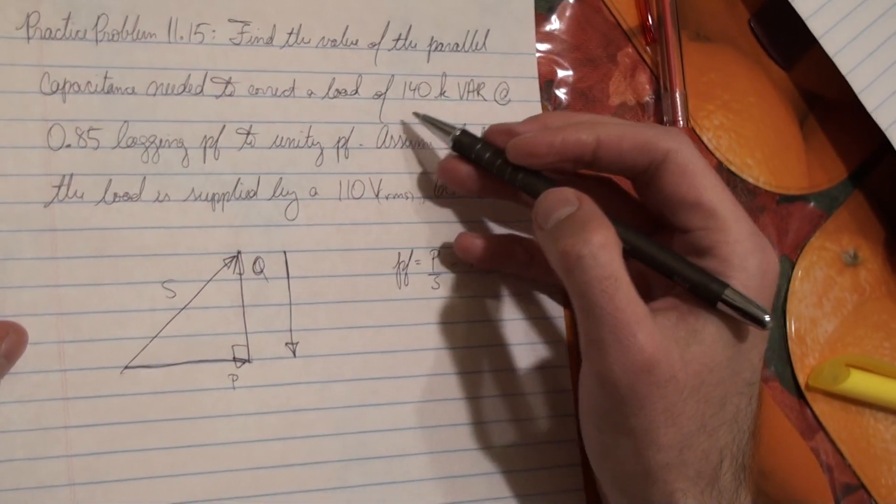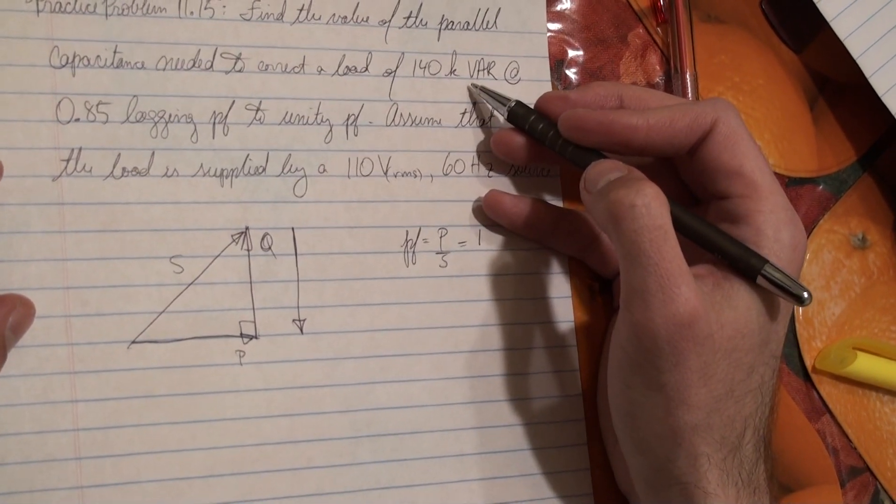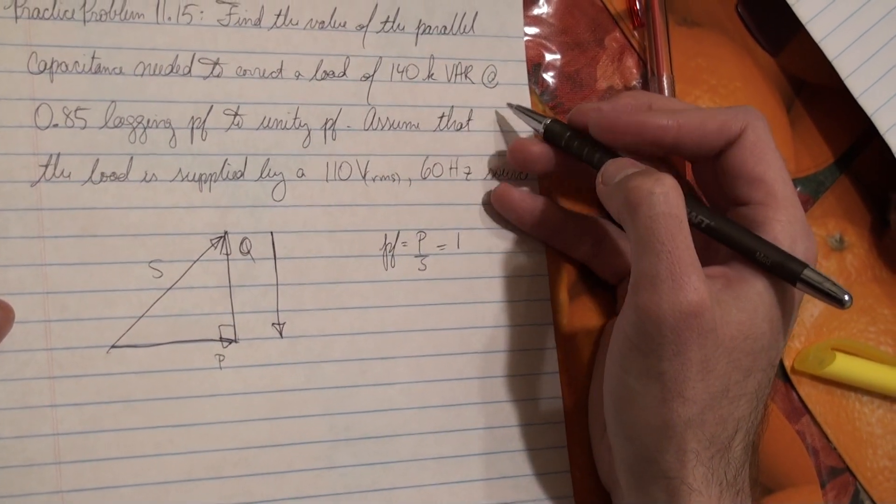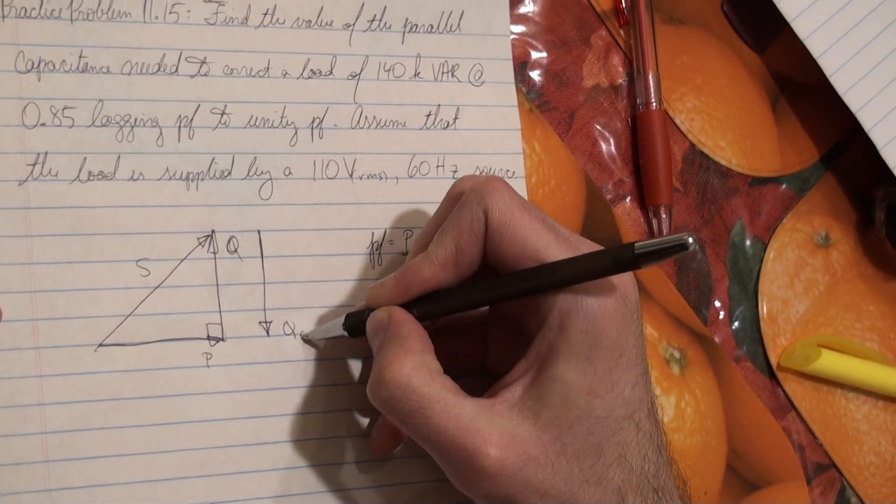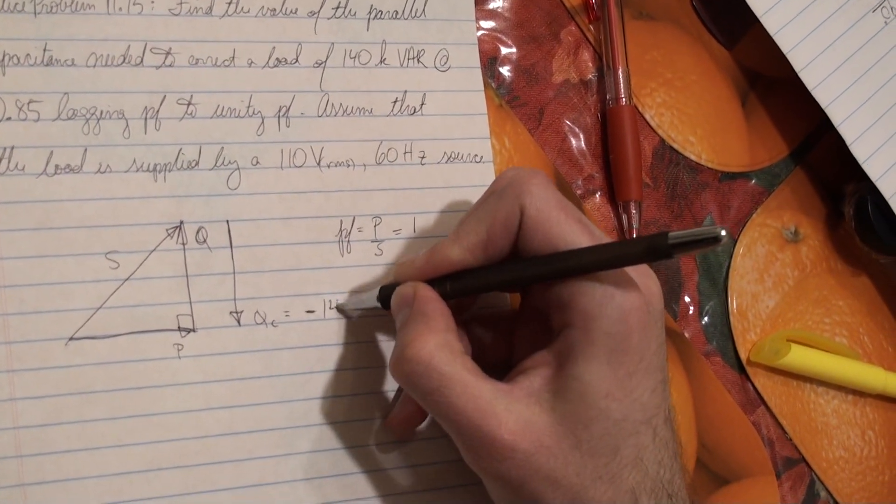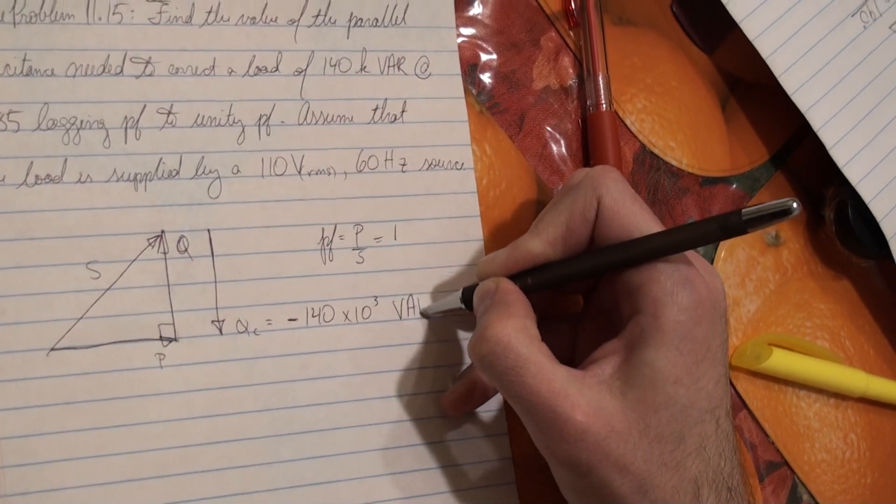So the load has 140 kilovars, that's the Q. So to get unity power factor, we need to suppress exactly 140 kilovars. So this QC needs to be, with a minus, 140 times 10 to the 3 volt ampere reactive.